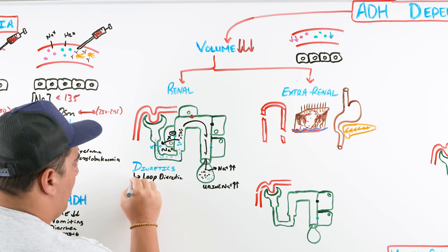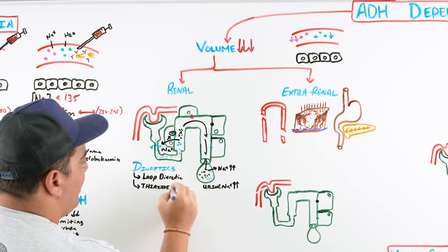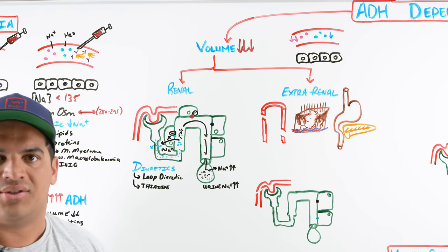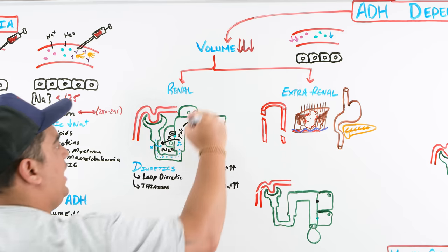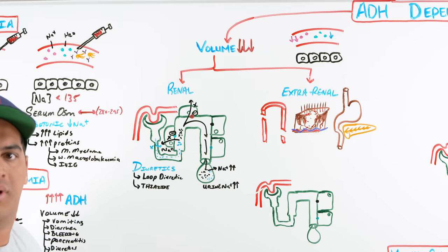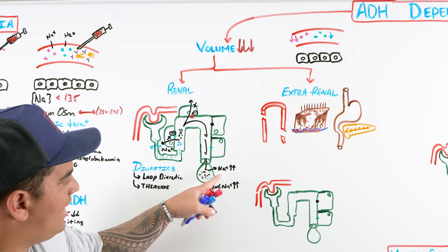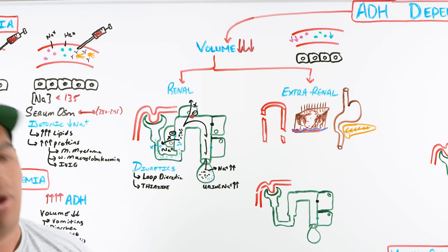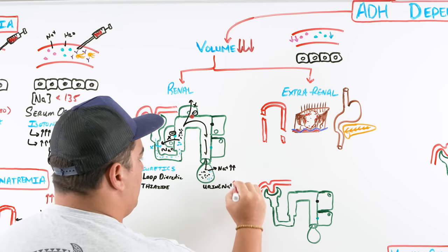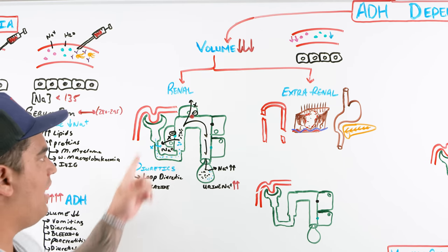Thiazide diuretics inhibit the sodium-chloride cotransporter in the early distal convoluted tubule. Sodium cannot be absorbed there, and subsequently water isn't reabsorbed either. You lose sodium and water in the urine, and the urine sodium goes up — again indicating a renal loss.